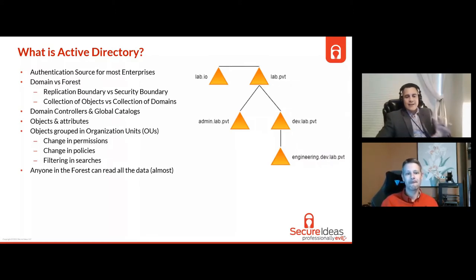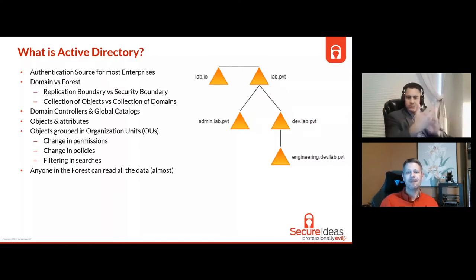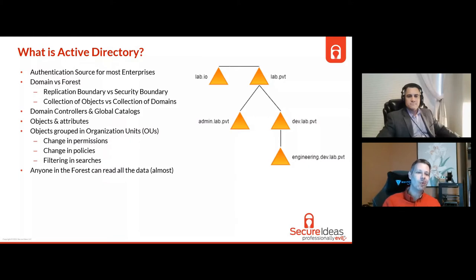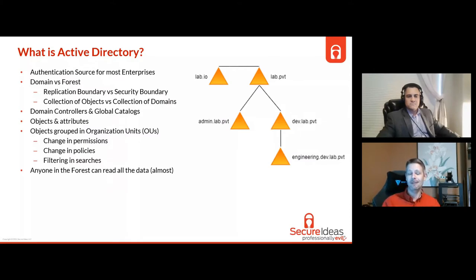It's all about changing permissions. So you group user objects together in an OU and the administrators apply a security change at that OU saying here and anything below it is where the help desk can make changes — like a forced password reset. One important thing to note: anybody in the forest — any person or computer that can log into a domain in the forest — can pretty much see all of the data in Active Directory for any of the objects.